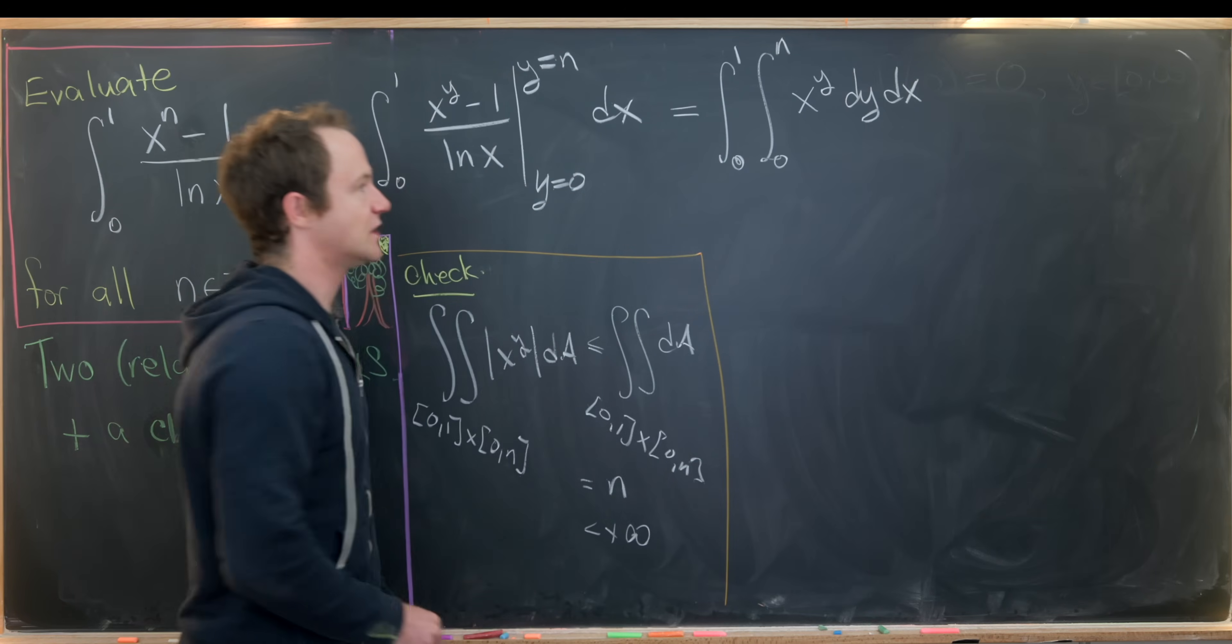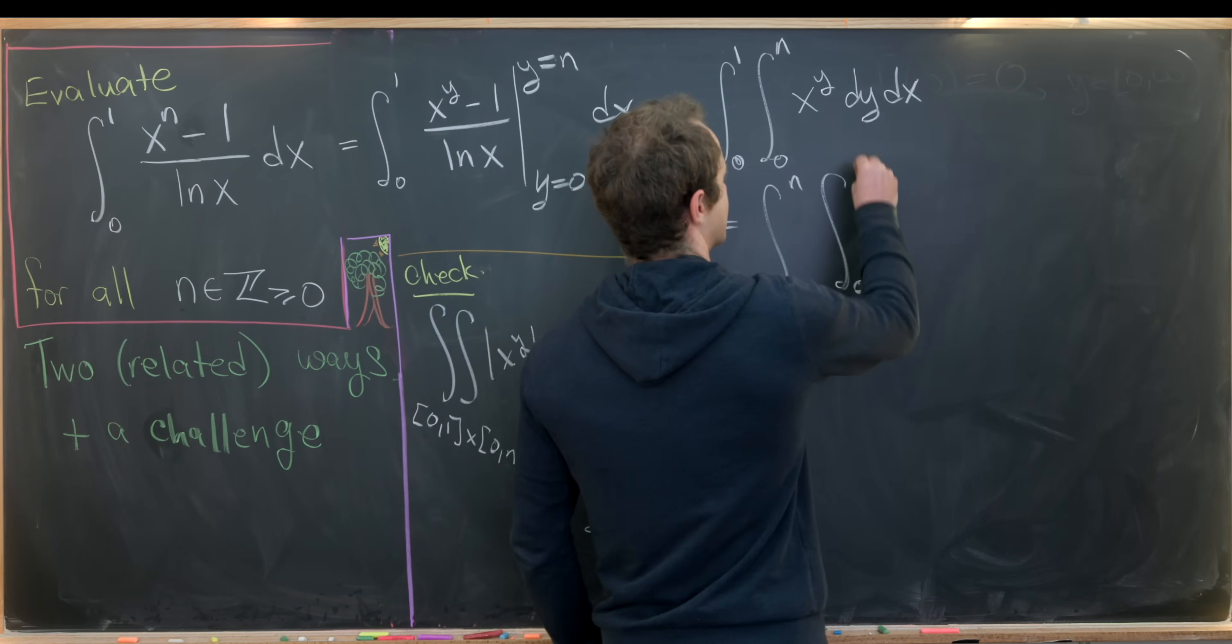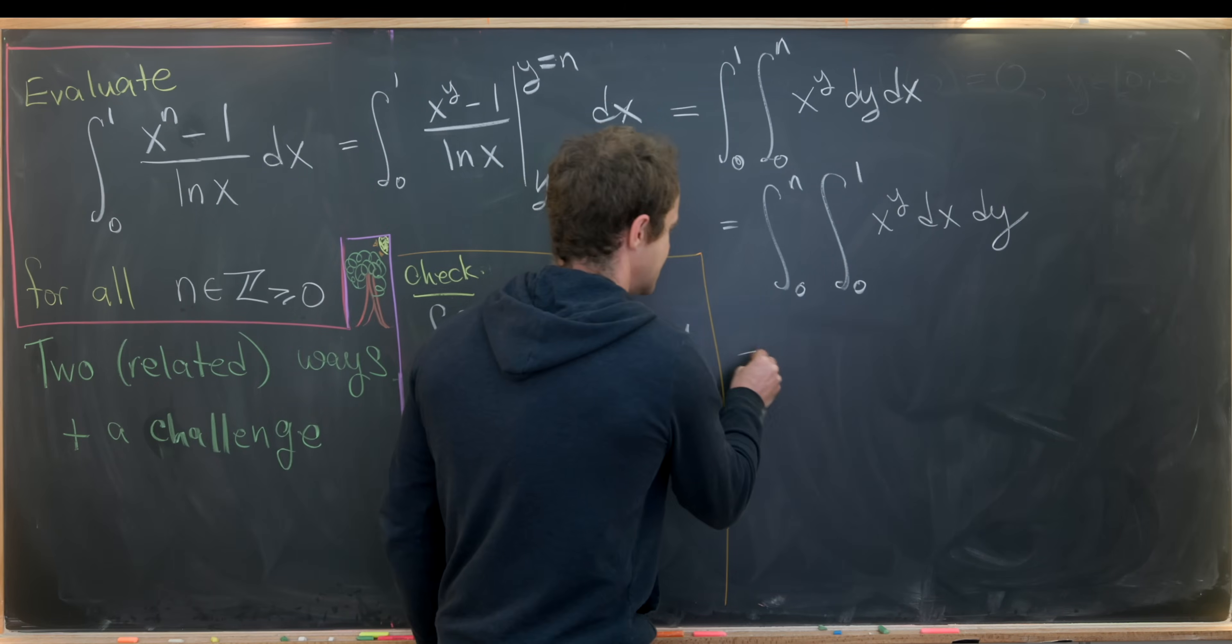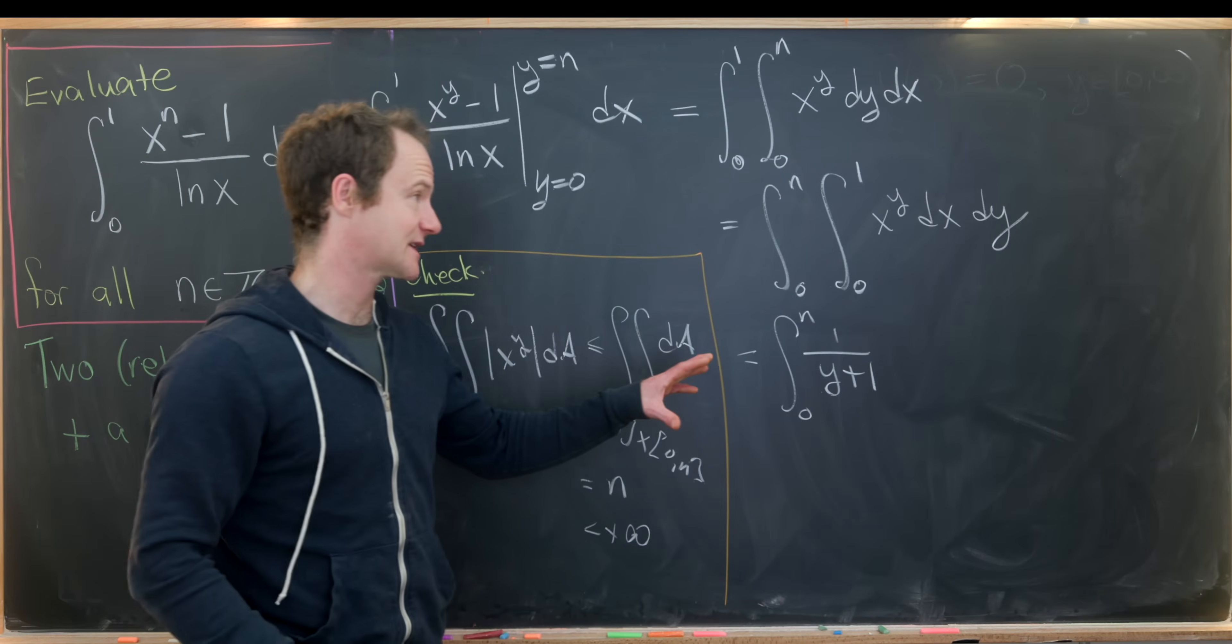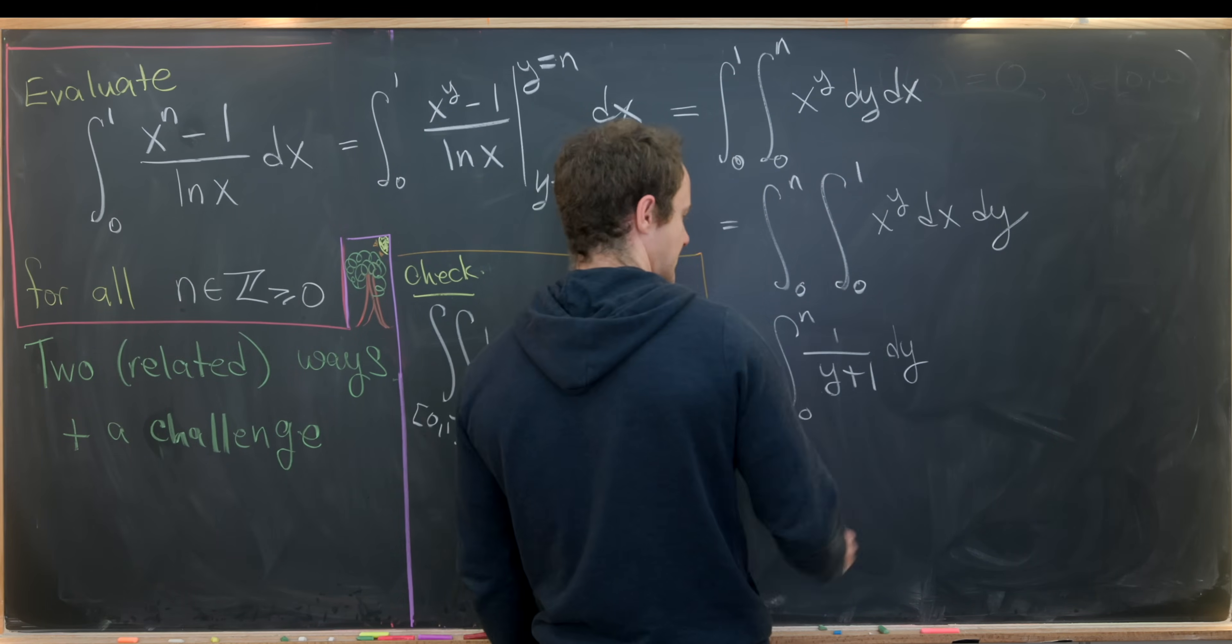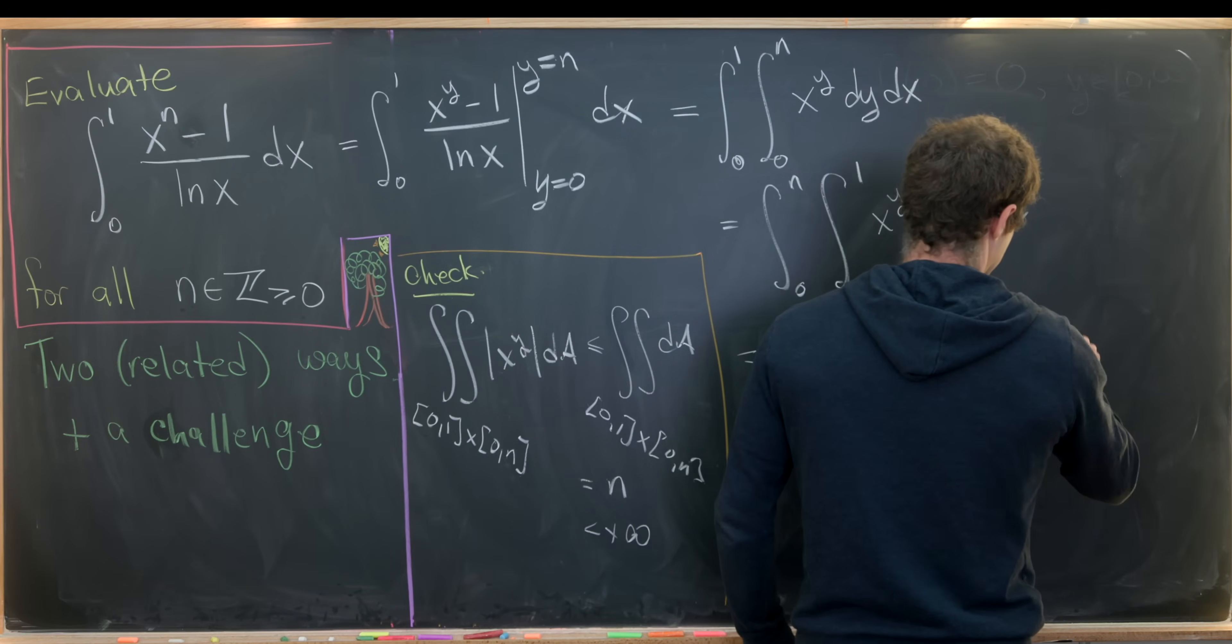So that means we're allowed to change the order of integration. So let's do that. So we've got the integral from 0 to n, and then the integral from 0 to 1 of x to the y dx dy. And now we're essentially home free. Taking that inside integral, we'll get 1 over y plus 1 times x to the y plus 1 evaluated from 0 to 1. That'll just give us 1 over y plus 1. And then we'll have dy here. And then taking the antiderivative of this, we'll get the natural log of y plus 1 evaluated at the upper bound, we'll give us natural log of n plus 1.